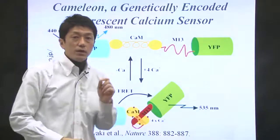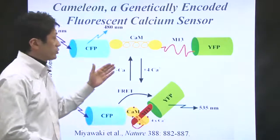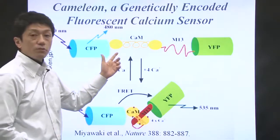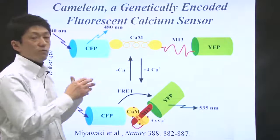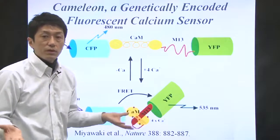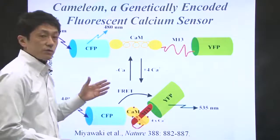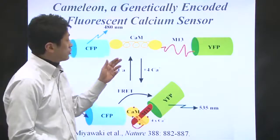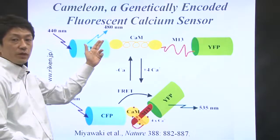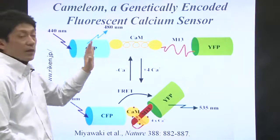In absence of calcium, the structure of chameleon is relaxed so that FRET does not happen. You observe cyan emission from CFP in this case.